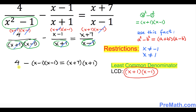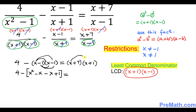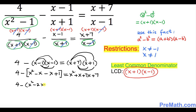Let's simplify. We have 4 minus the FOIL expansion of (x-1)(x-1). Using the FOIL method: x times x is x squared, then -1 times x and x times -1 give -2x, and -1 times -1 gives positive 1. So that expands to x squared minus 2x plus 1, giving us 4 minus (x squared minus 2x plus 1) on the left, equal to x squared plus 8x plus 7 on the right.